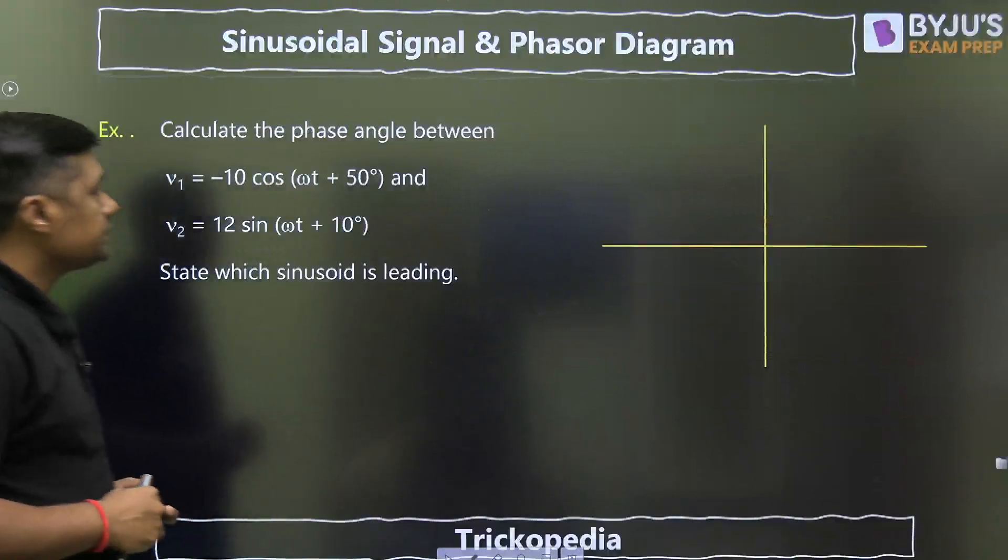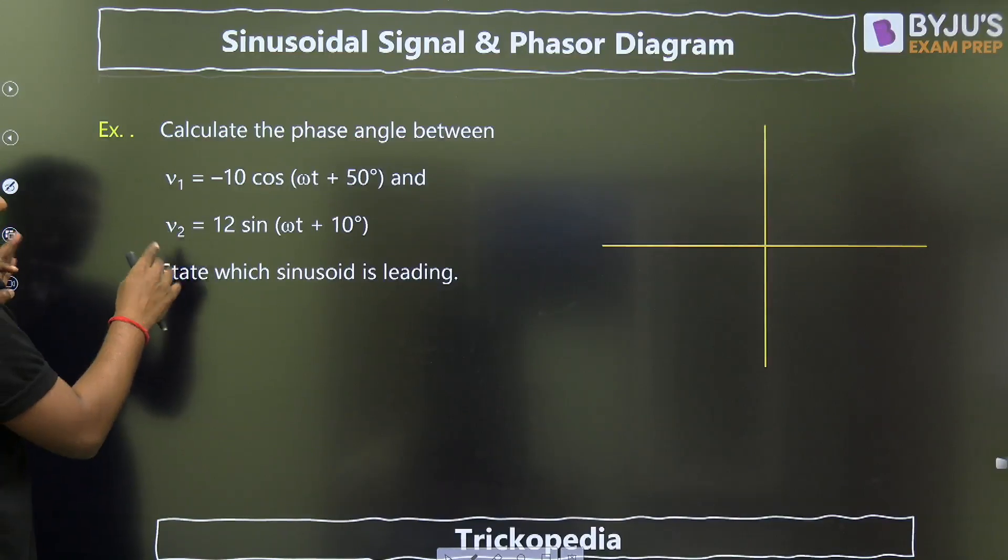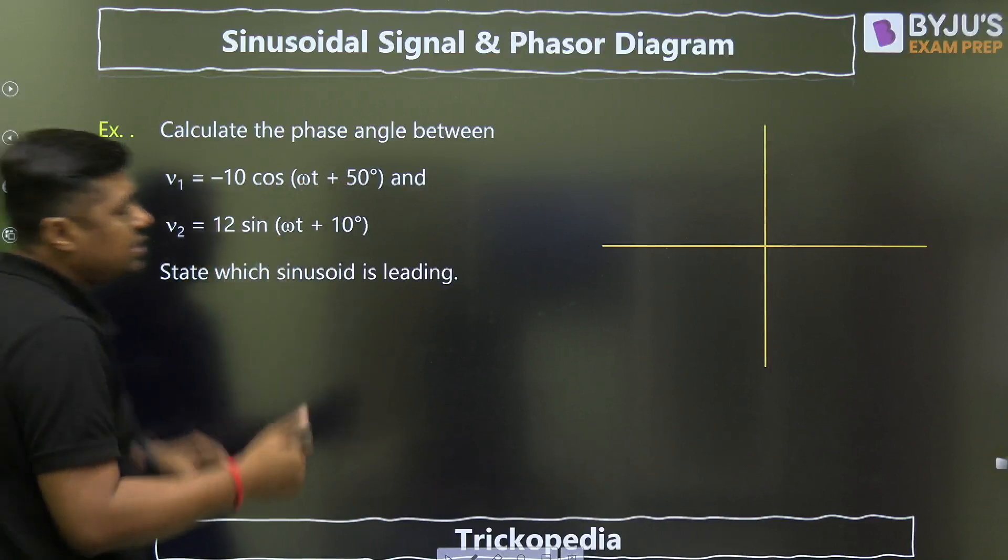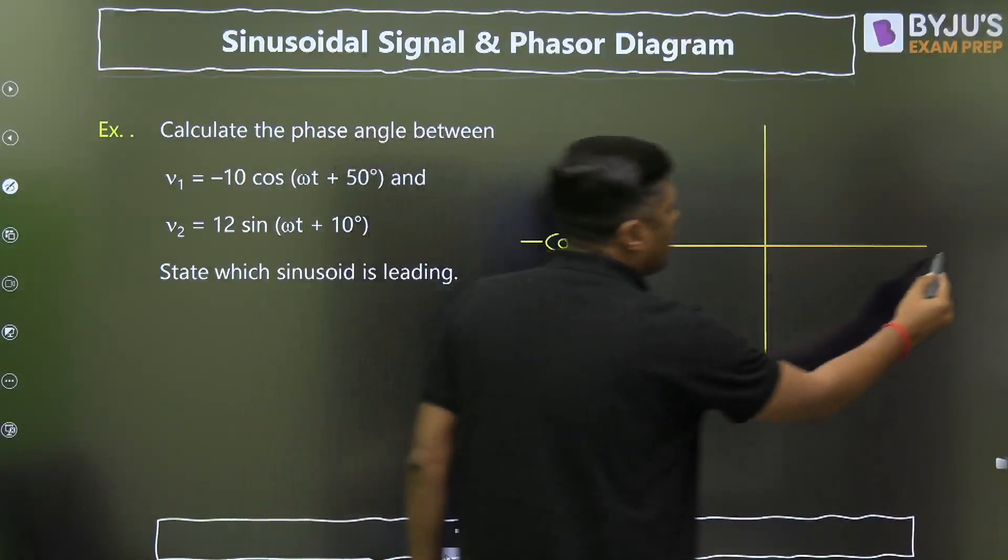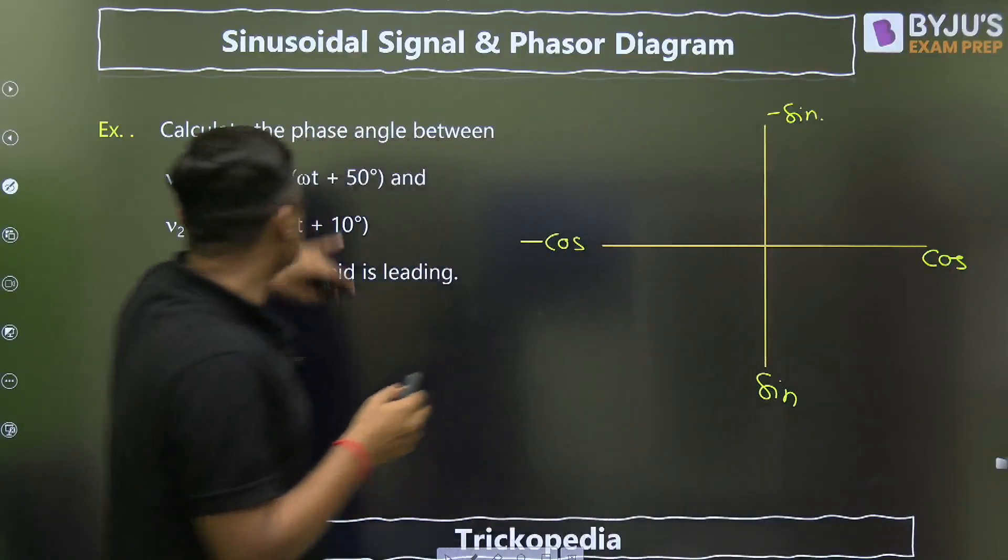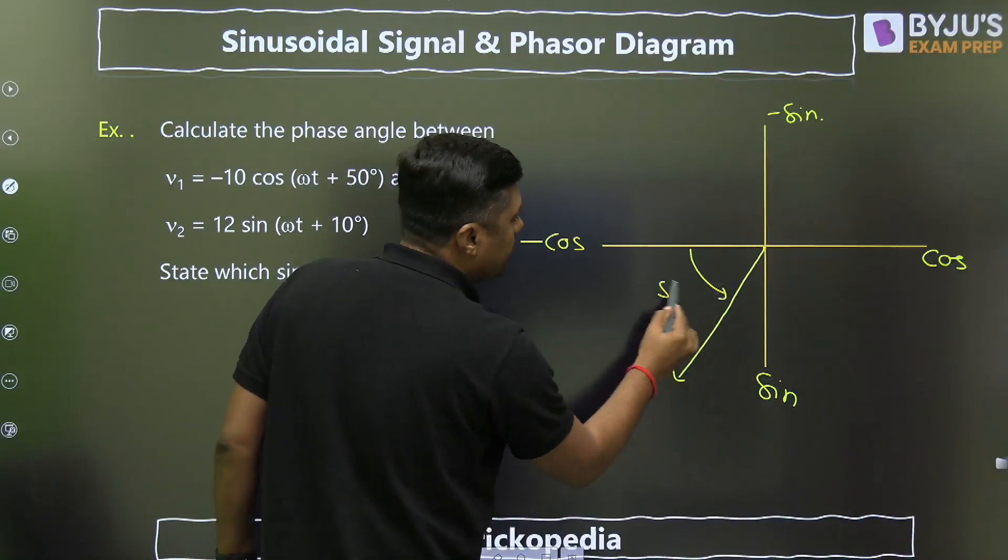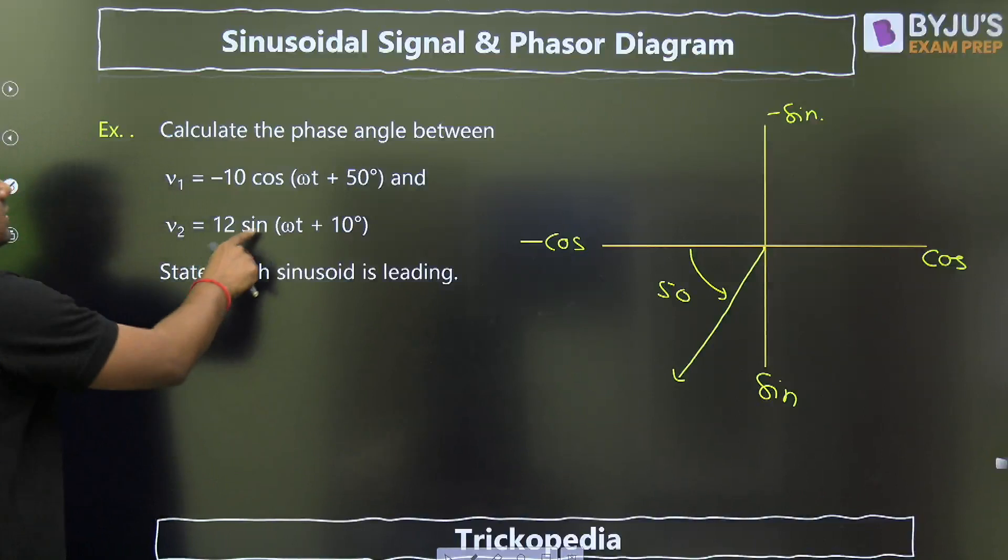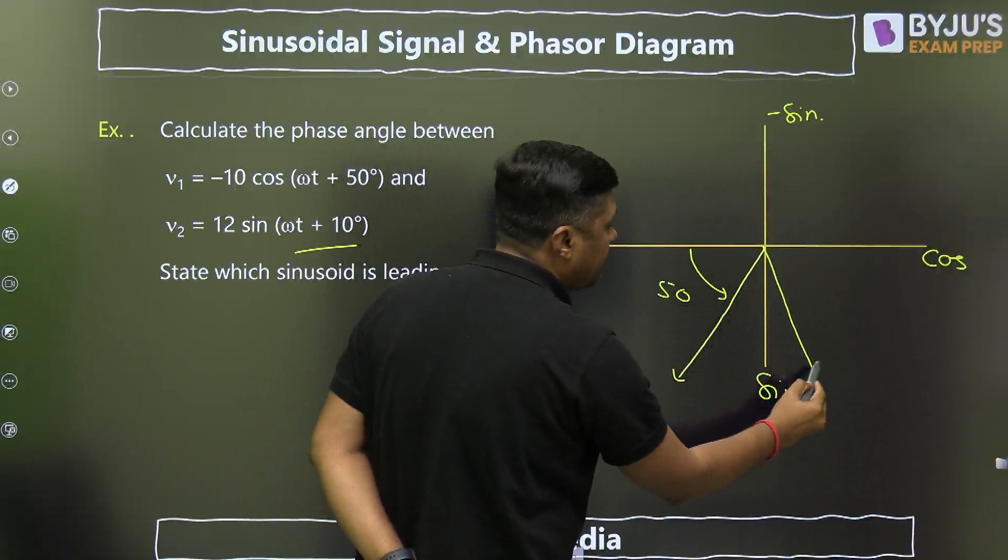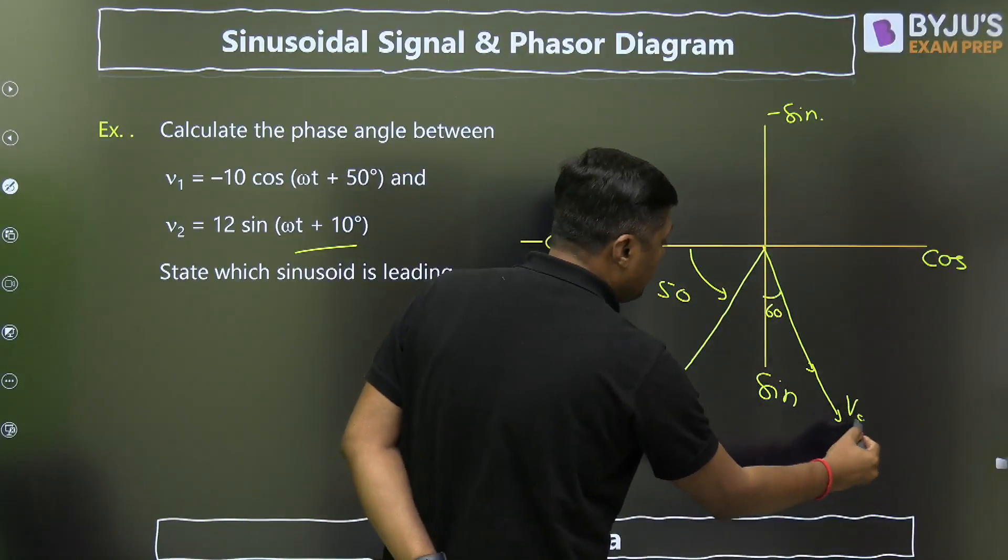Then calculate the phase angle between these two. So this question is very, very easy. Represent minus 10 cos of ωt plus 50. Where is the minus cos? This is minus cos. This is cos, this is sin, and this is minus sin. Then this is 50 degrees anti-clockwise direction with respect to that. So this is the 50 degrees. And this is 12 sin of ωt plus 10 degrees. Again, this is anti-clockwise because it is positive. This is only the 10 degrees. This is the 10 degrees. And this is V2, this is V1.